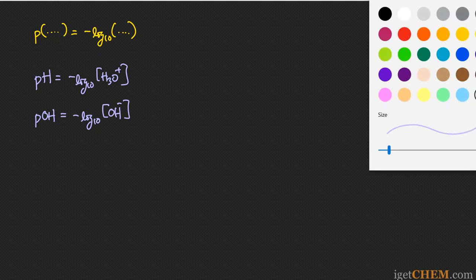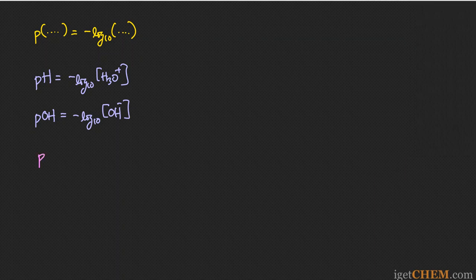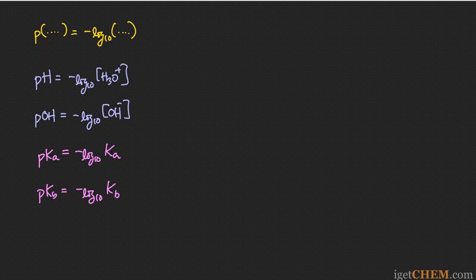You can also apply this definition to the Ka value of an acid. In that case, pKa is defined as negative log base 10 of Ka, which is the acid dissociation constant. So within acid-base chemistry, this symbol P is used to mean exactly that.